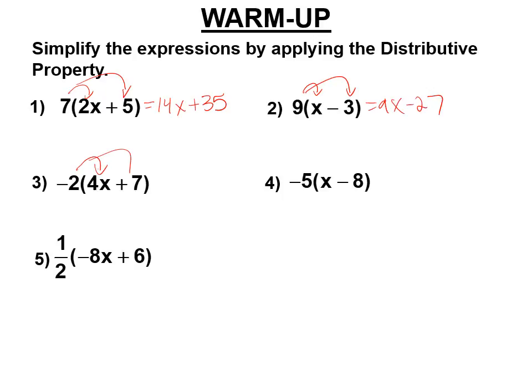Distributing a negative 2, negative 2 times 4x, negative 8x, times a plus 7, minus 14. Negative 8x minus 14.